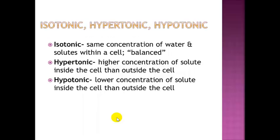Now we'll briefly discuss three different types of solutions. Isotonic means there is the same concentration of water and solutes both inside and outside a cell — it's balanced. To give a quick example: the solvent is like liquid tea, and if you put sugar in it, the sugar is the solute that dissolves into the solvent.